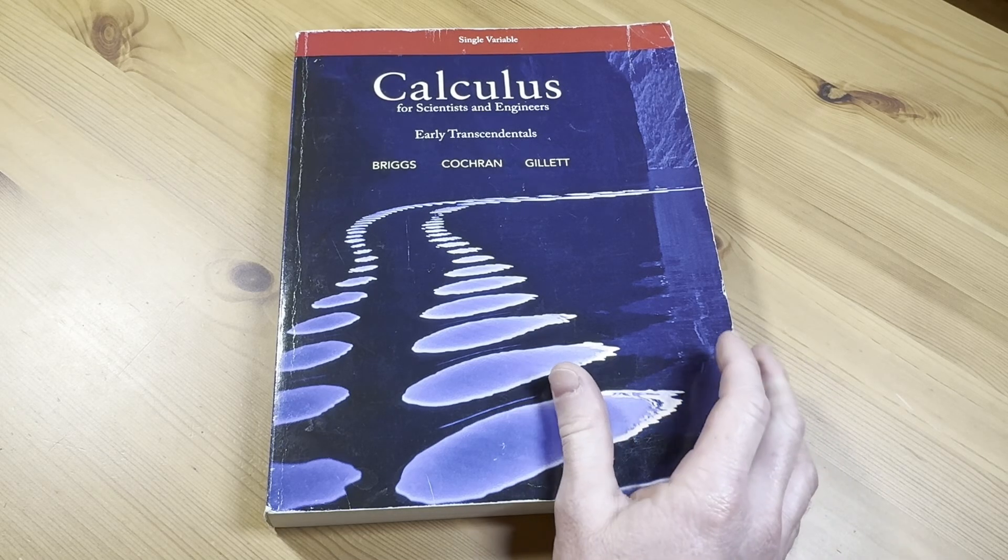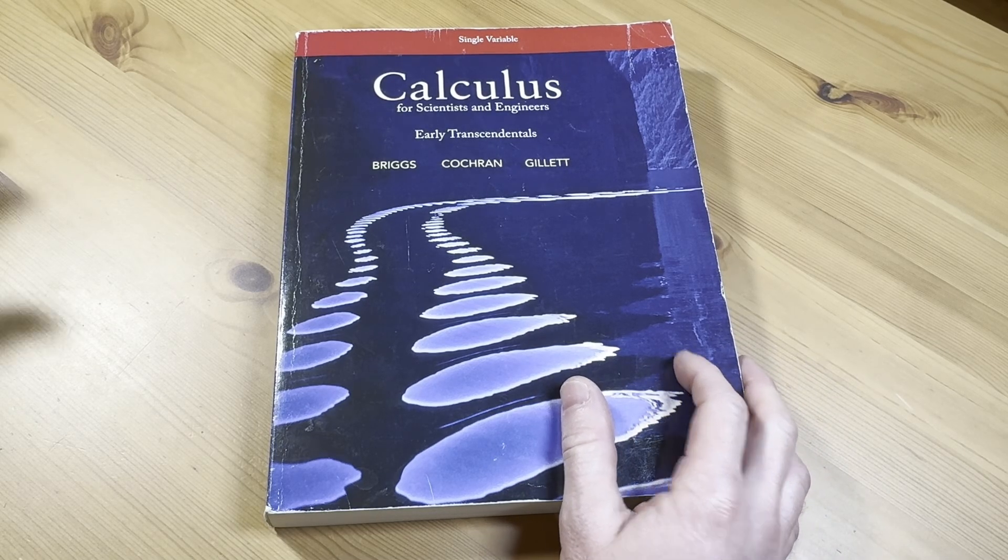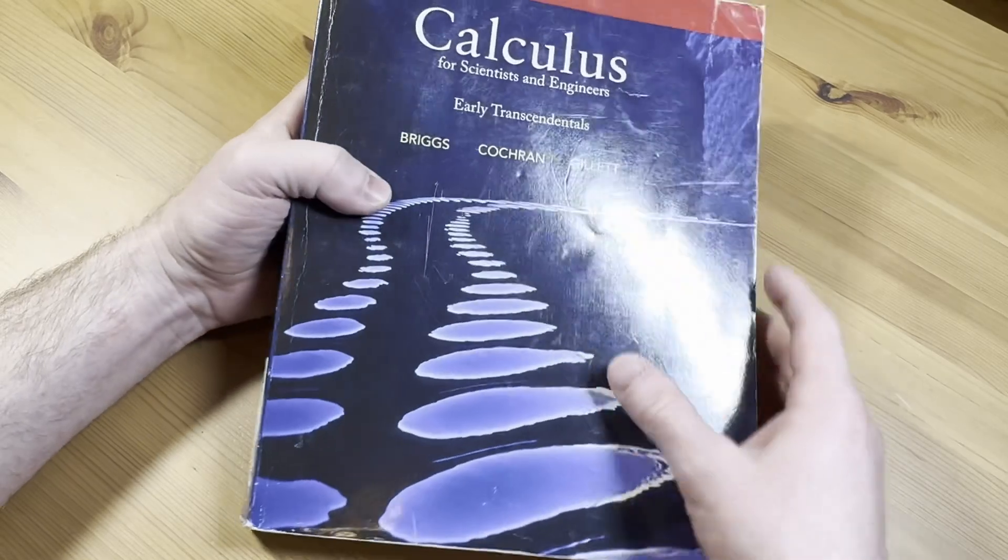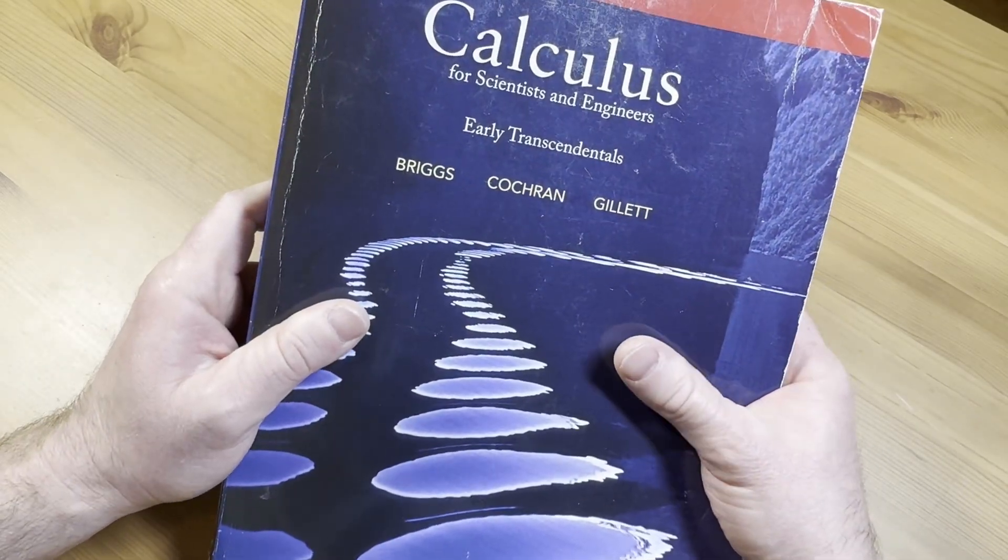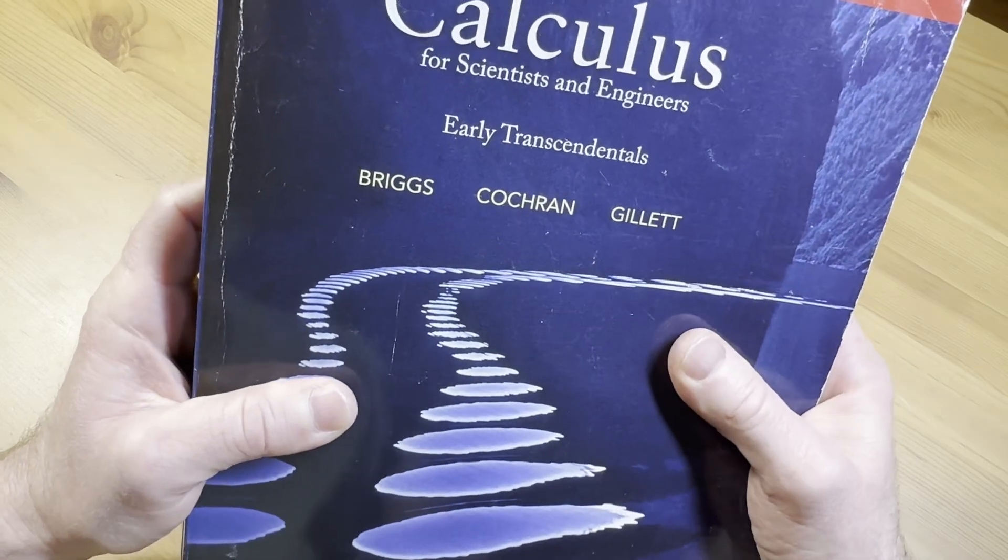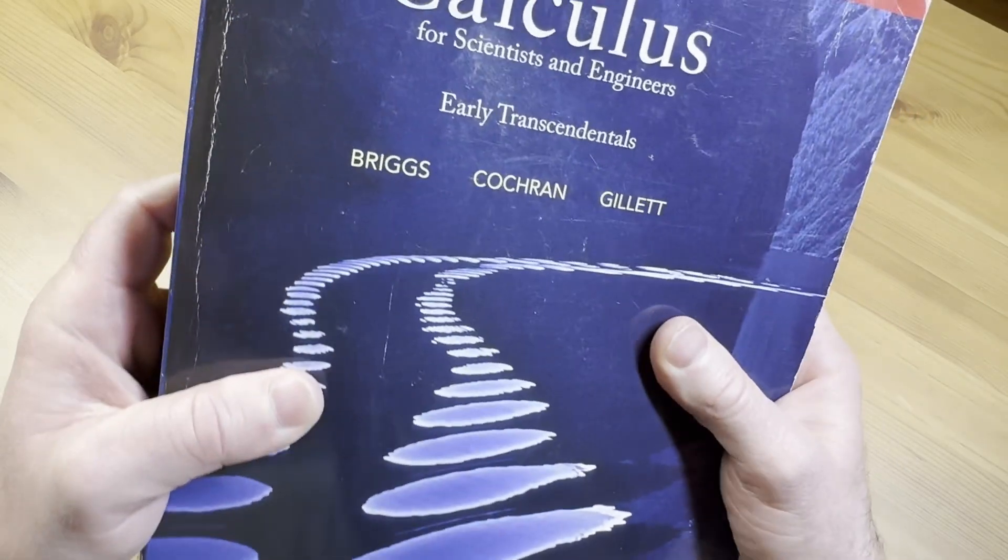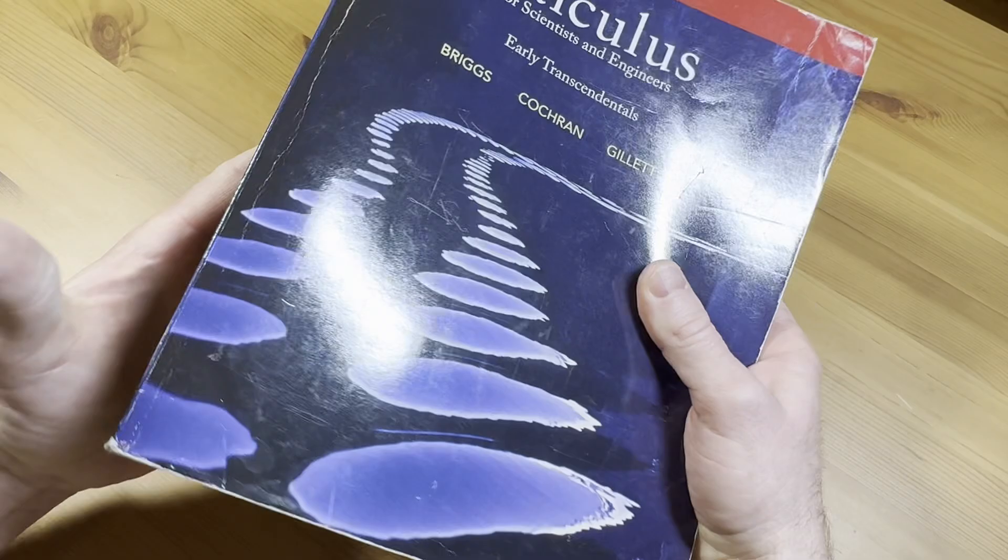Hello. In this video, we are going to take a quick look at this calculus book. It is called Calculus for Scientists and Engineers. It is the early transcendentals version, and it was written by Briggs, Cochran, and Gillette, or maybe it's Gillette. This is a modern book.